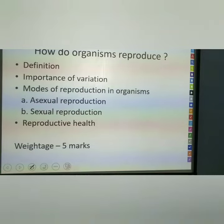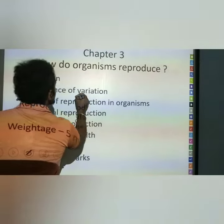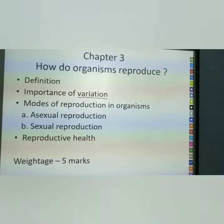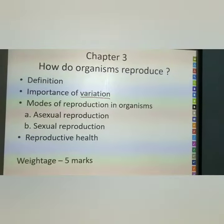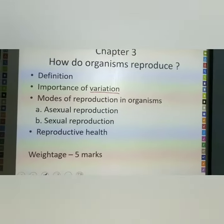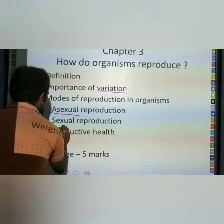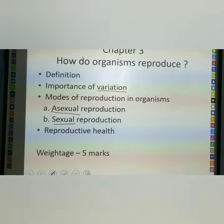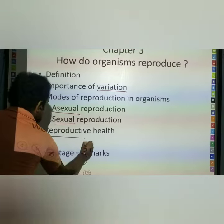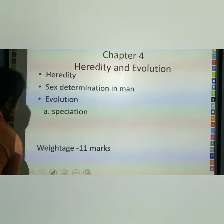Chapter 3 is How Do Organisms Reproduce? The main thing here is variation — what is variation, and why it is required. We also cover modes of reproduction in organisms and reproductive health. This chapter carries five marks.